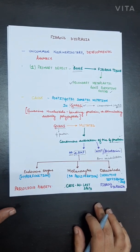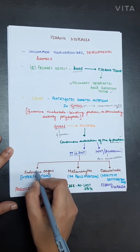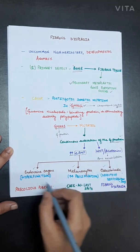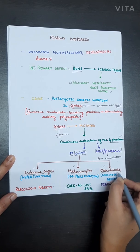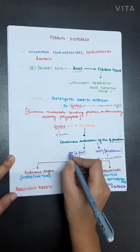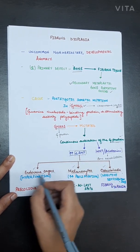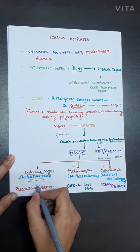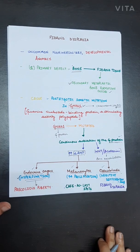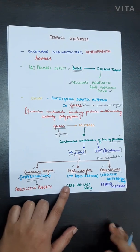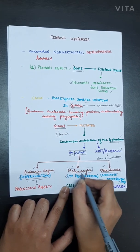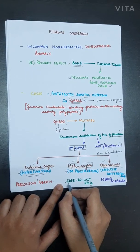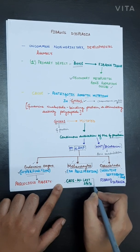The continuous activation of G protein has a direct impact on cyclic AMP, leading to overproduction of cyclic AMP. Cyclic AMP has three basic roles: impact on endocrine organs, on melanocytes, and on osteoblasts. Overproduction of cyclic AMP causes hyperfunction of endocrine organs, leading to precocious puberty, hyperthyroidism, and cortisol overproduction. Hyperproliferation of melanocytes also occurs, resulting in café-au-lait spots.